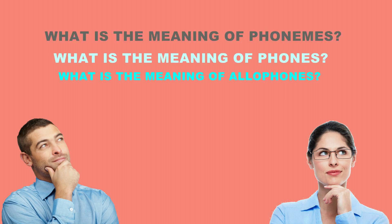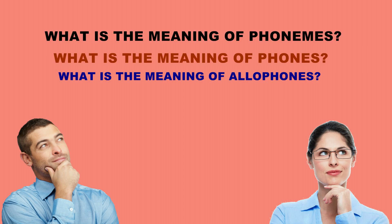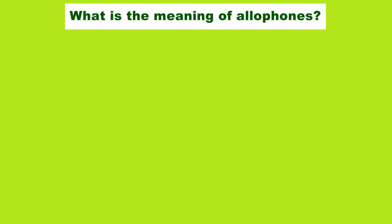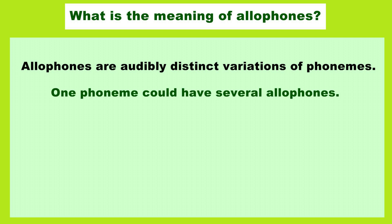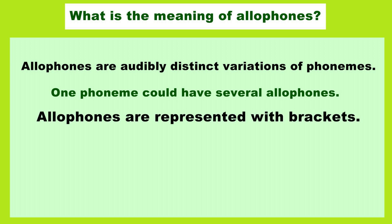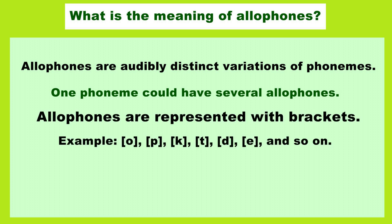The last thing I am going to explain is about allophones. Allophones are audibly distinct variations of phonemes. They are the set of possible spoken sounds used to pronounce one single phoneme. One phoneme could have several allophones. Allophones are also represented with brackets.